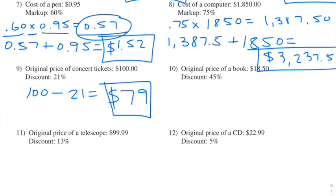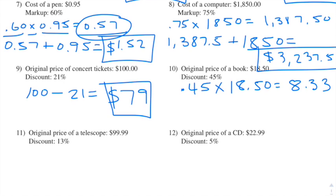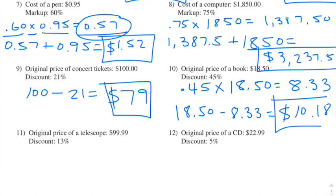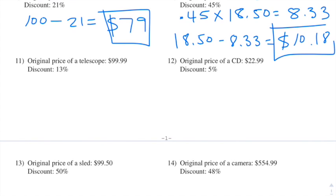Number ten: the original price of a book is $18.50 and the discount is 45%. We're taking 45% of 18.50 — that's 0.45 times 18.50 — and we end up getting $8.33 (rounding from 8.325). We take $18.50 minus $8.33 and we end up getting $10.18.